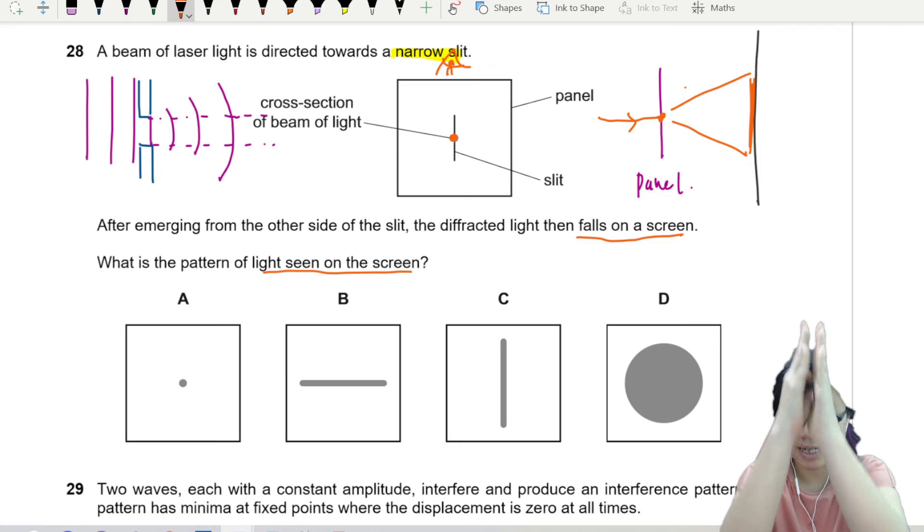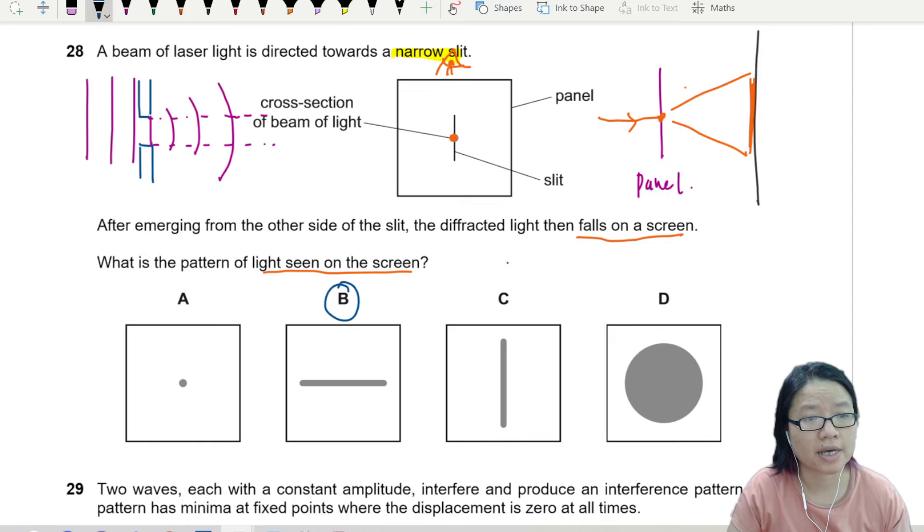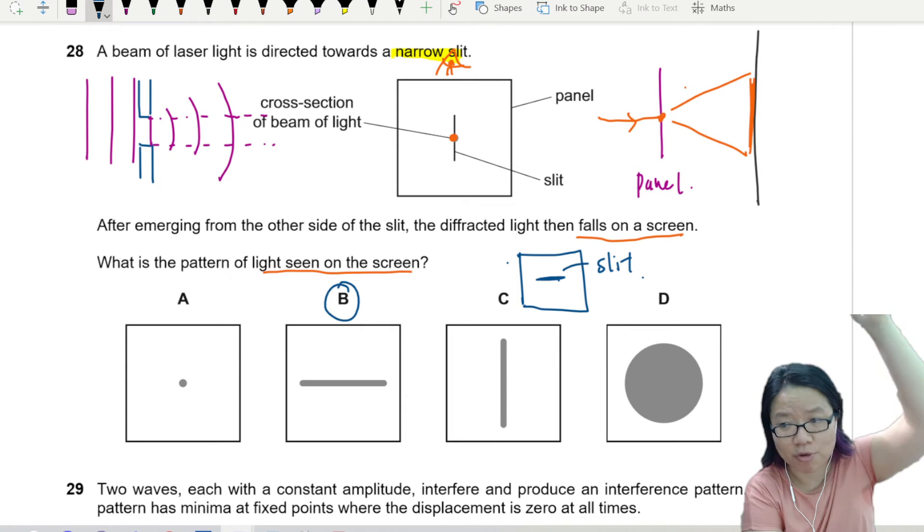Because the slit is vertical, when we reach the slit, it will spread out horizontally. So the answer is C. C is when the panel is like this, and the slit is like this. Because then the wave will spread out away from the gap.